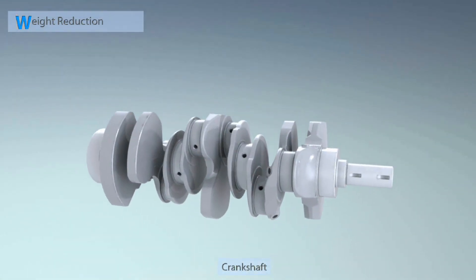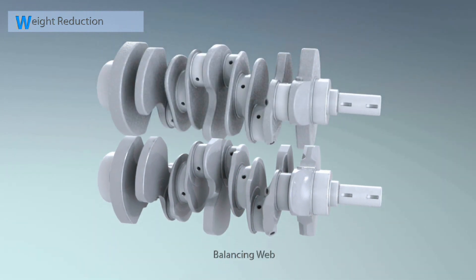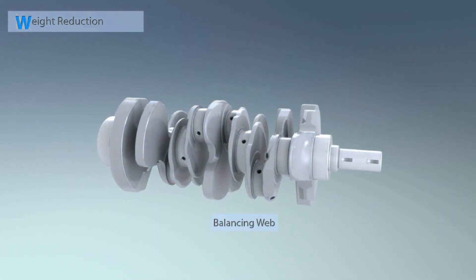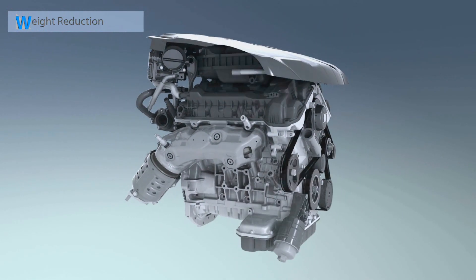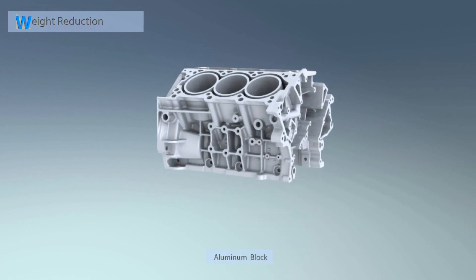And the world's best in-class fuel economy is achieved by applying new technologies to reduce fuel consumption. Through the optimum design of crankshaft balancing web, an overall weight is significantly reduced and a weight-saving aluminum block is applied as well.